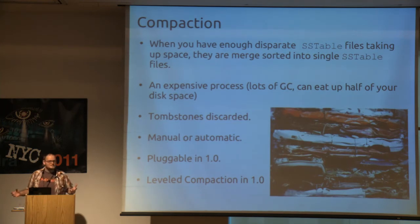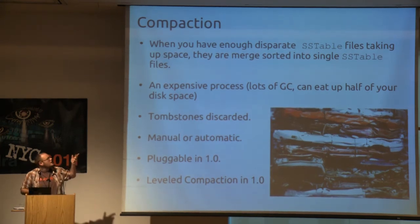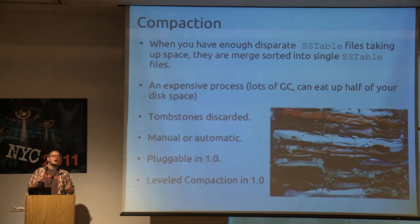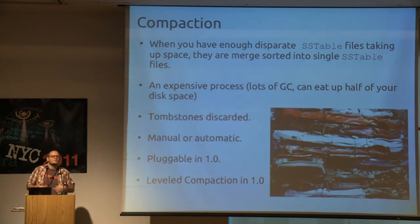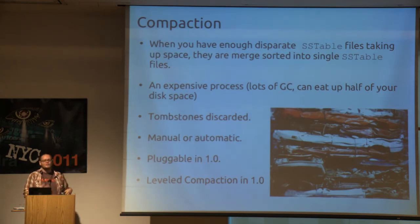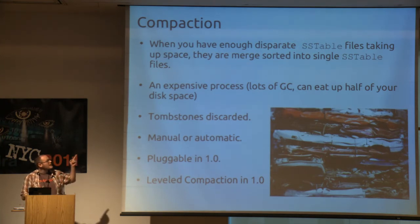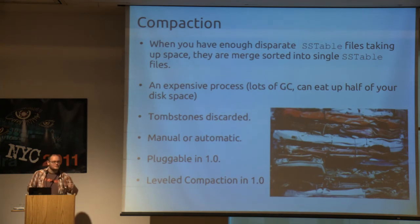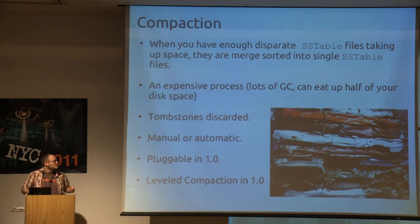When you have enough SSTables built — this is a configurable item in your cassandra.yaml — you need to merge those together. One gotcha: once you take six SSTable files and merge them into one, you invalidate a lot of your file system cache, which adds load on the server. It's an expensive process with lots of garbage collection. We've been using Cassandra since 0.4 and it's a lot better since 0.7 — we used to run into compactions and have big garbage collections, partly because we didn't understand we needed twice as much space to handle compaction. Tombstones are discarded during this time. It's a manual or automatic process; there are always minor compactions going on, and now it's pluggable with leveled compaction.